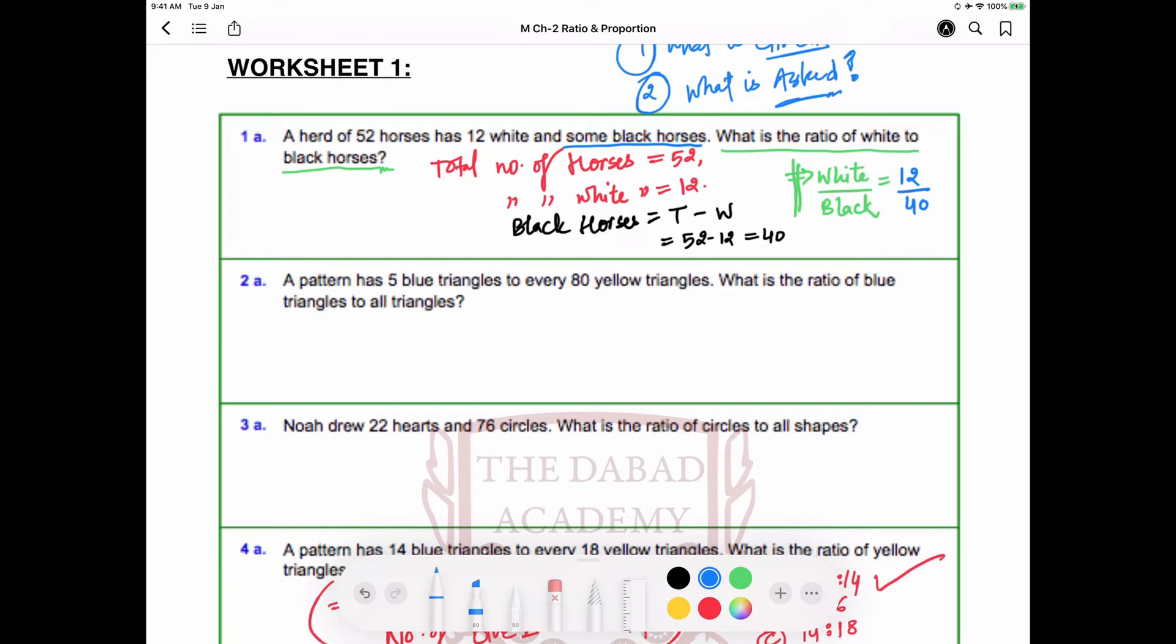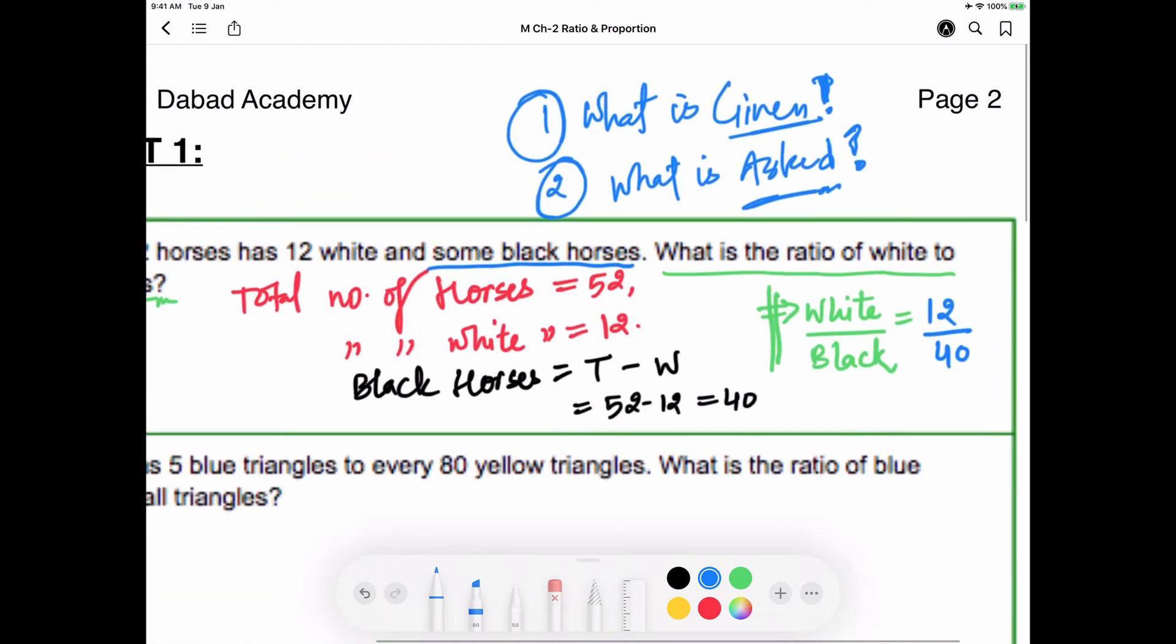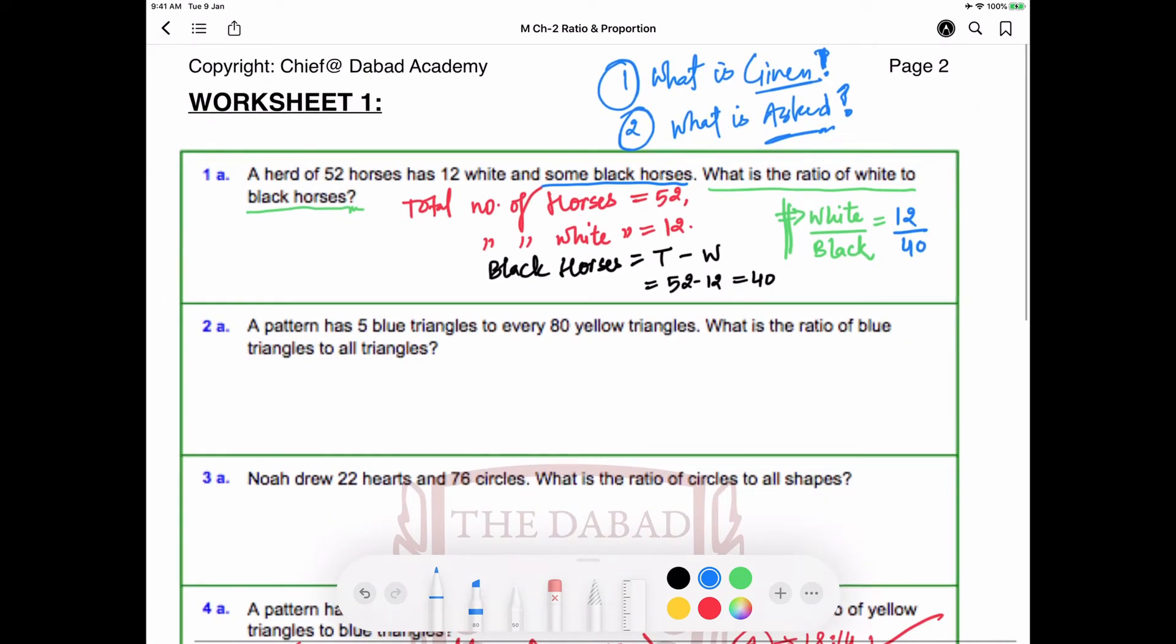Let's move on to the second question. A pattern has 5 blue triangles to every 80 yellow triangles. What is the ratio of blue triangles to all triangles? This is a very basic question. As I just told you, we need to focus on what is given and what is asked.